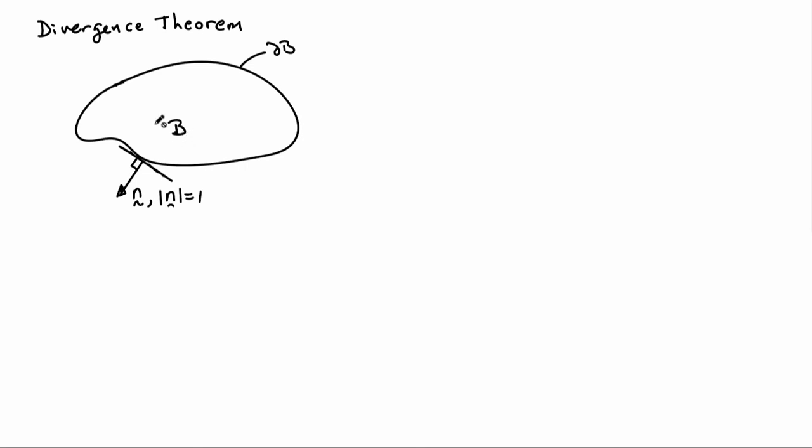So here we have a body b again and it has a surface partial b so that's the notation that we use to denote the surface of a body and there's also a unit normal outward normal field.